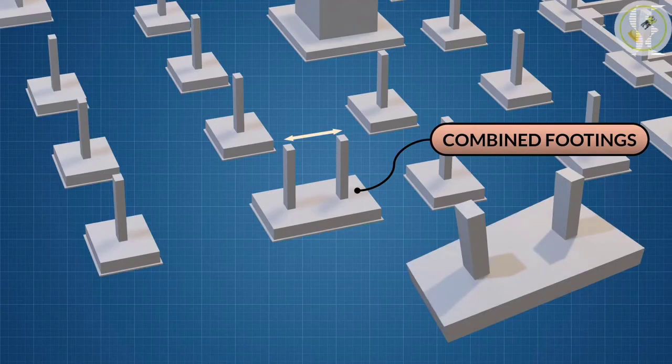By combining it with that of an interior column, the load is evenly distributed. A combined footing may be rectangular or trapezoidal in plan.